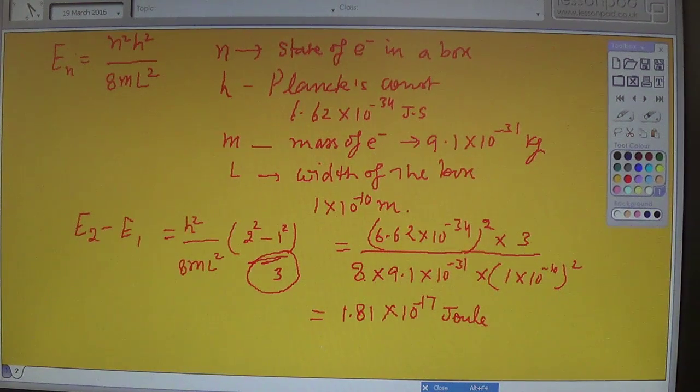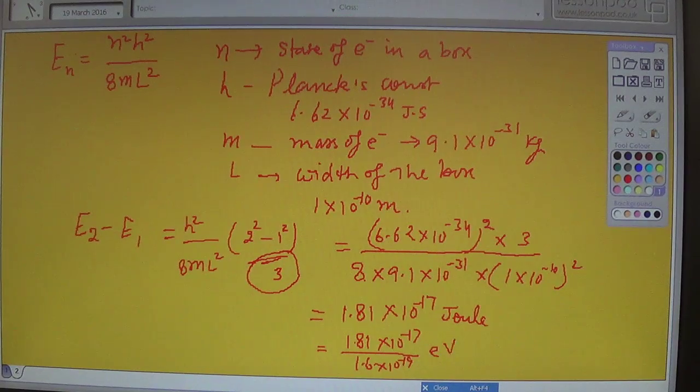Divide this energy difference by 1.6 times 10 raised power minus 19 and the answer will be in electron volts.